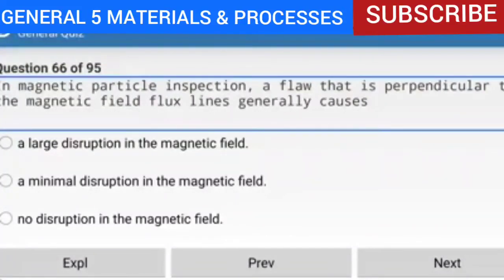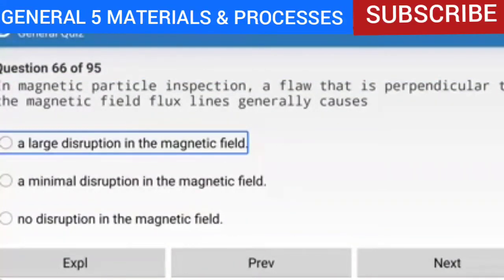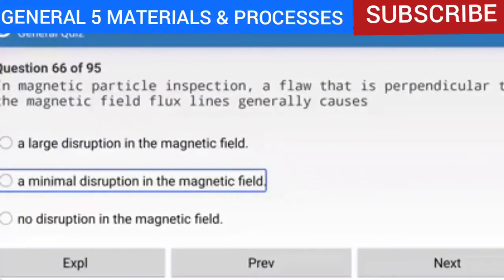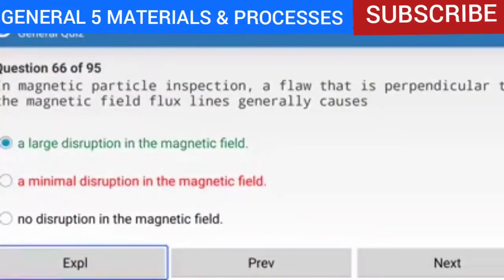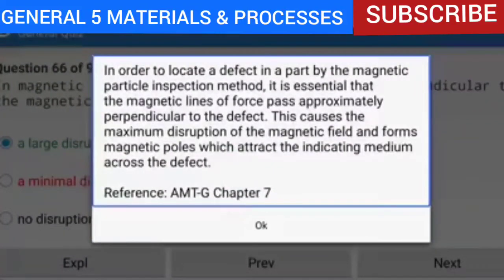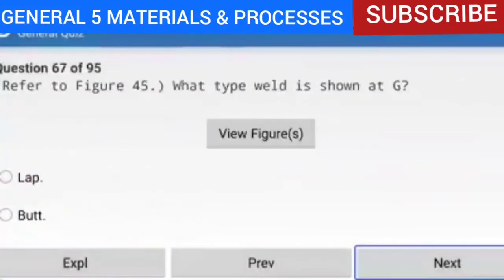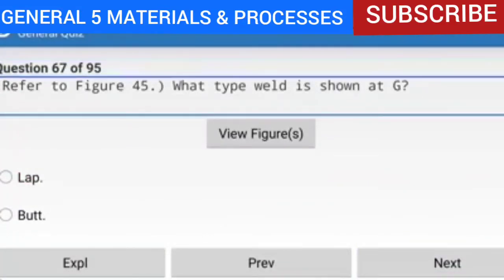Question 66 of 95: In magnetic particle inspection, a flaw that is perpendicular to the magnetic field flux lines generally causes a large disruption in the magnetic field. In order to locate a defect, it is essential that the magnetic lines of force pass approximately perpendicular to the defect. This causes the maximum disruption of the magnetic field and forms magnetic poles which attract the indicating medium across the defect. Reference: AMTG Chapter 7.